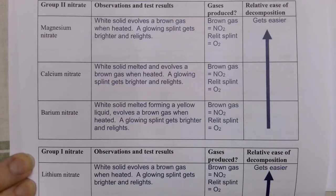So here are the results from this thermal decomposition experiment. You should see that all the Group 2 nitrates decompose to give off the brown gas of nitrogen dioxide and they all relight the splint giving an indication that oxygen is also being given off. It gets easier as you go up the group as the magnesium cation is more polarising than the barium cation.